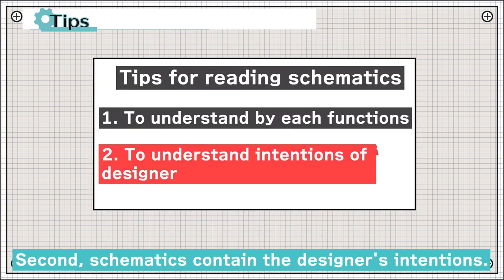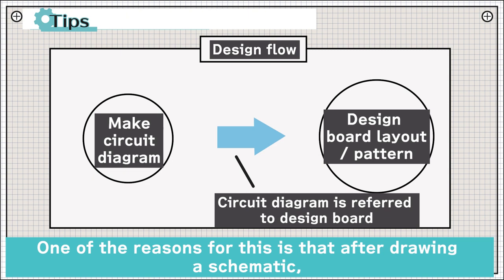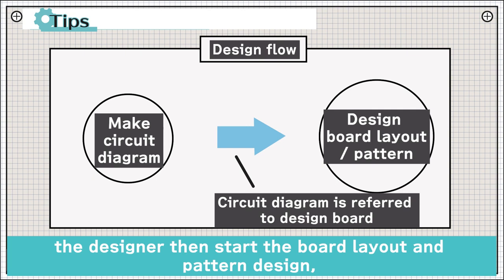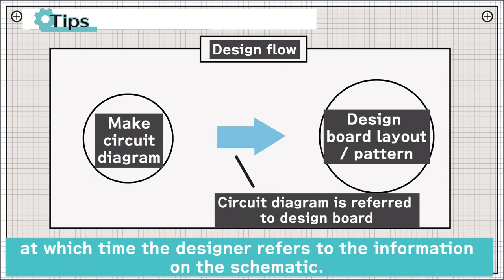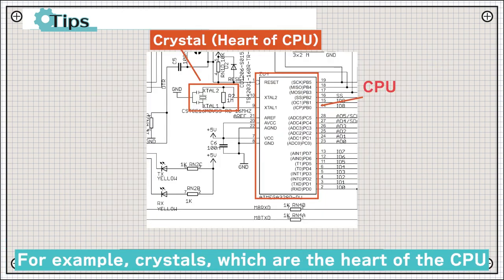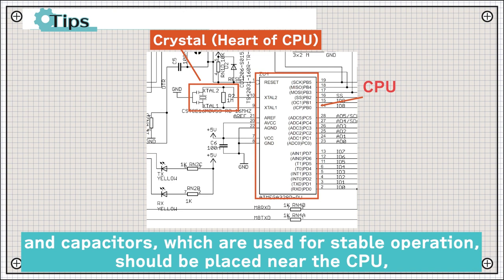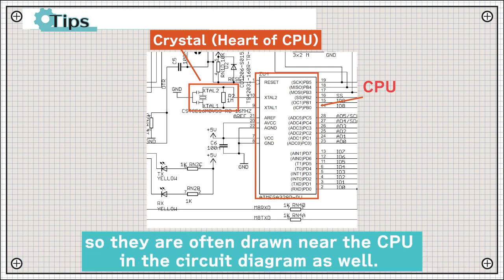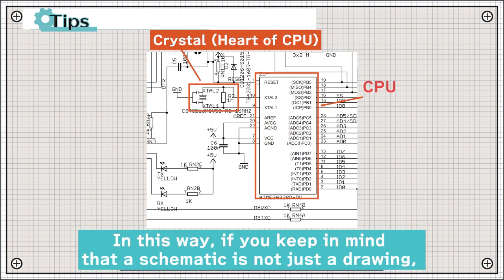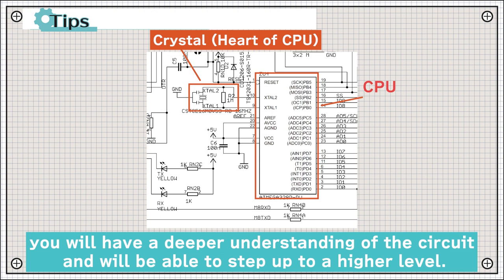Second, schematics contain the designer's intentions. One of the reasons for this is that after drawing a schematic, the designer then starts board layout and pattern design, at which time the designer refers to the information on the schematic. For example, crystals, which are at the heart of the CPU, and capacitors, which are used for stable operation, should be placed near the CPU, so they are often drawn near the CPU in the circuit diagram as well. In this way, if you keep in mind that a schematic is not just a drawing, you will have a deeper understanding of the circuit and will be able to step up to a higher level.